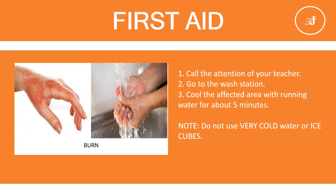Heating and boiling substances is part of the laboratory science experiment. Once a hot liquid is accidentally poured onto any part of your body, this is what you are going to do. First, call the attention of your teacher. Second, go to the wash station. Third, cool the affected area with running water for about 5 minutes. Note: do not use very cold water or ice cubes.